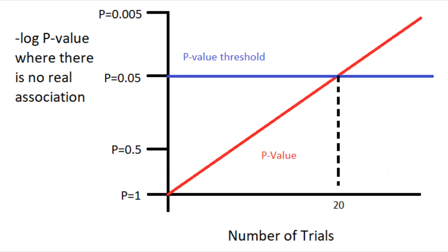Researchers use an arbitrarily agreed upon p-value threshold to decide how statistically significant the association needs to be to be confident that this association is real. Traditionally, this had been agreed upon as p ≤ 0.05, that is, a 1 in 20 chance of the association being a false positive.